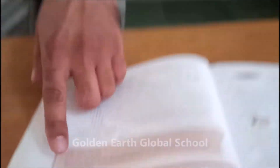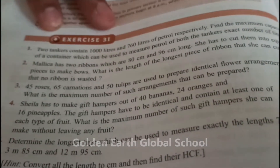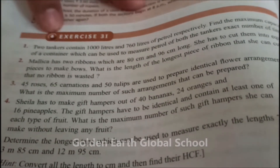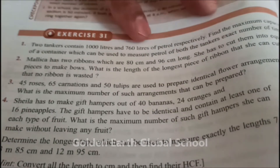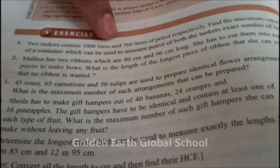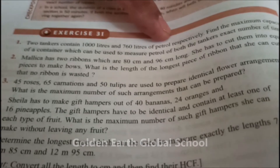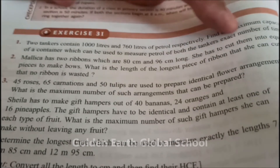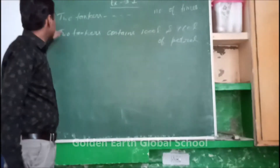Now look at the first question: two tankers contain 1000 liters and 760 liters of petrol respectively. Find the maximum capacity of a container which can be used to measure the petrol of both tankers an exact number of times. Look at the solution.